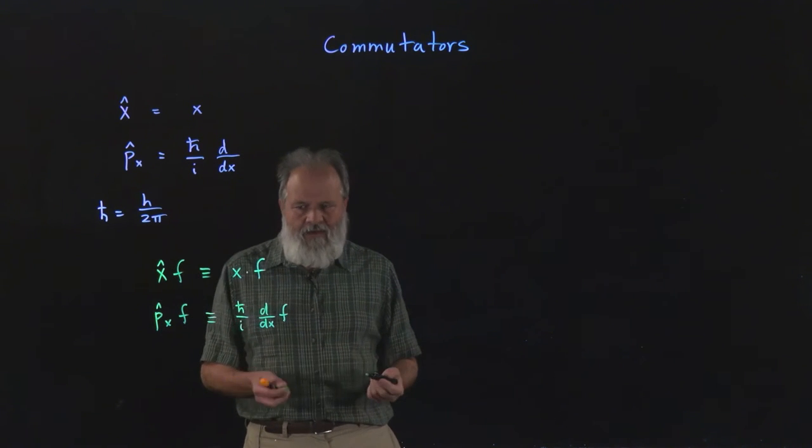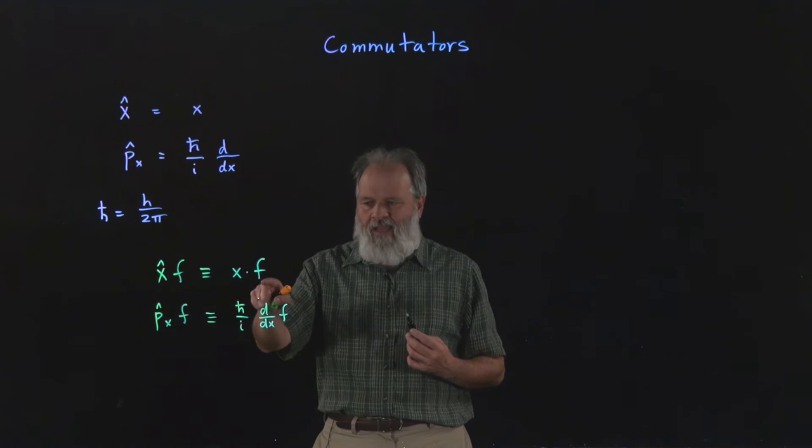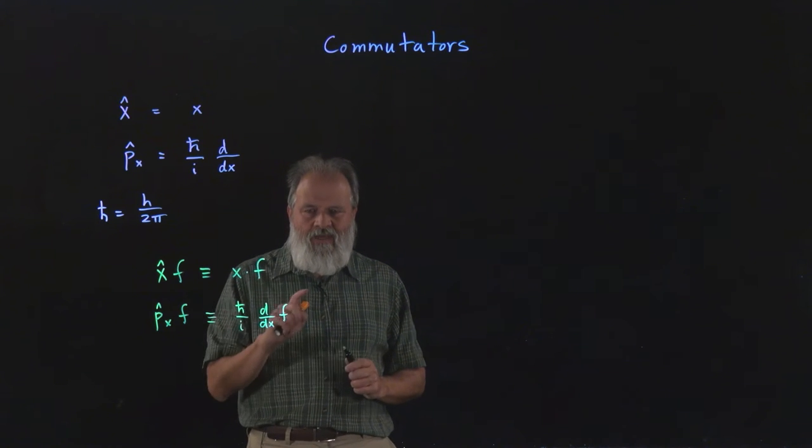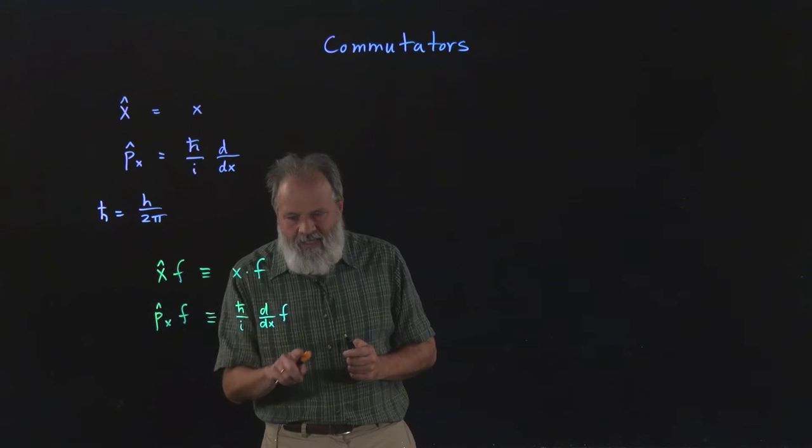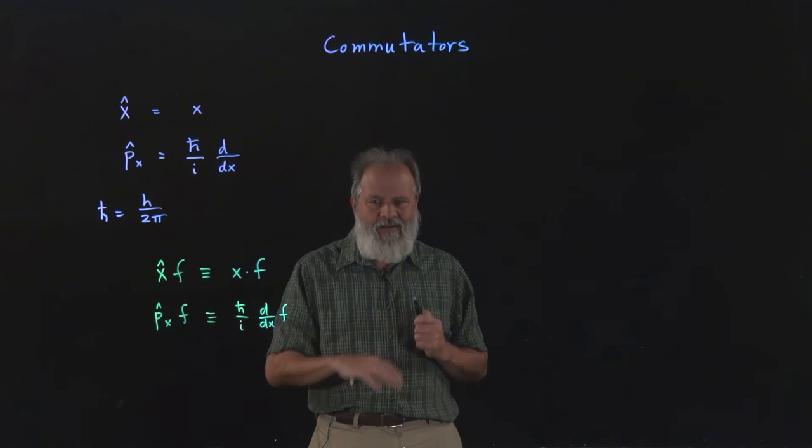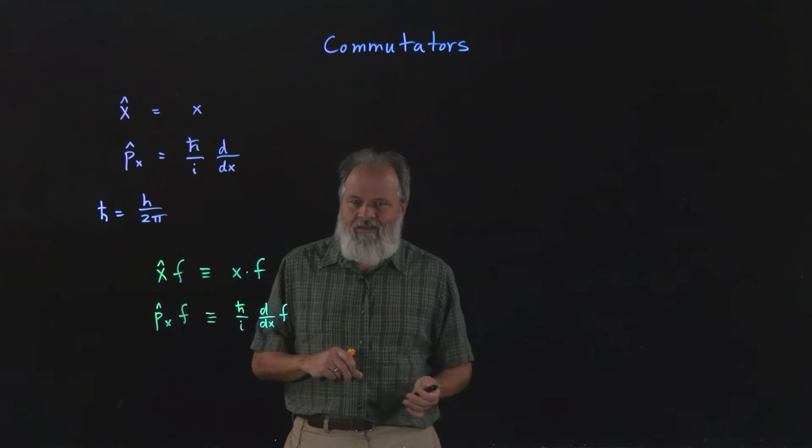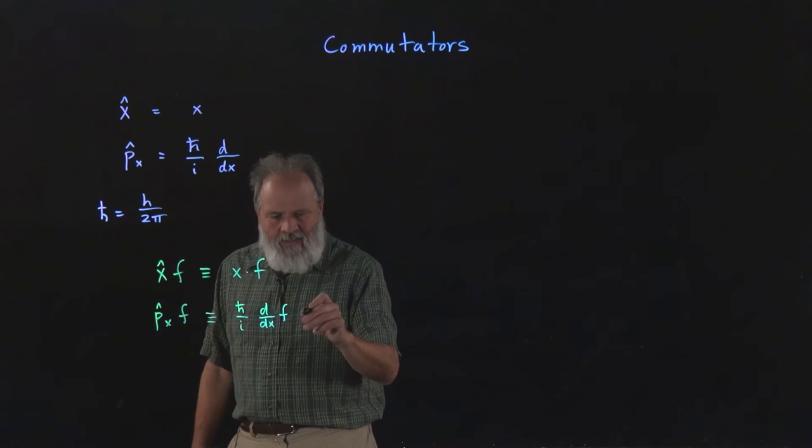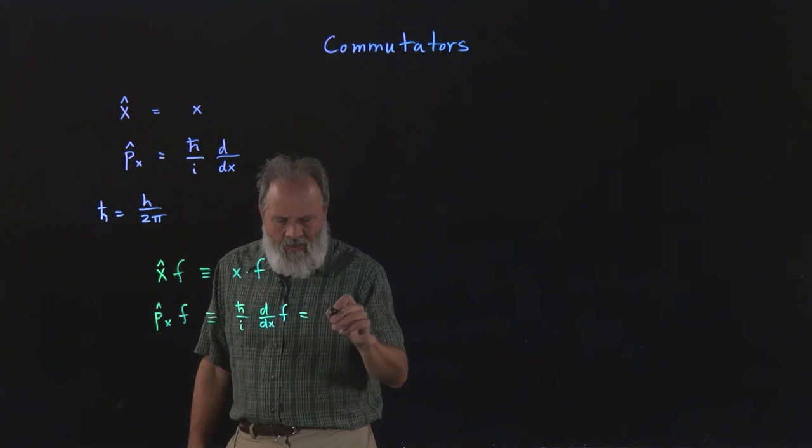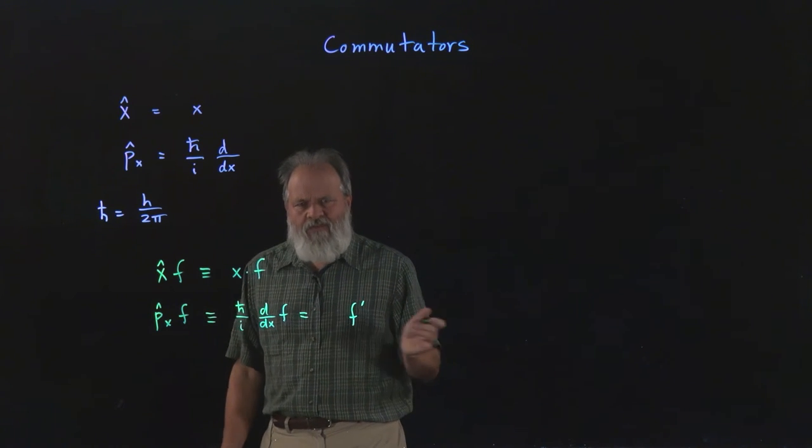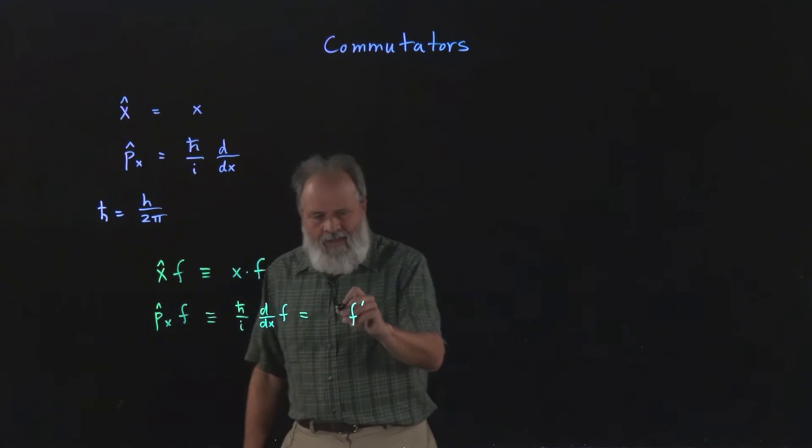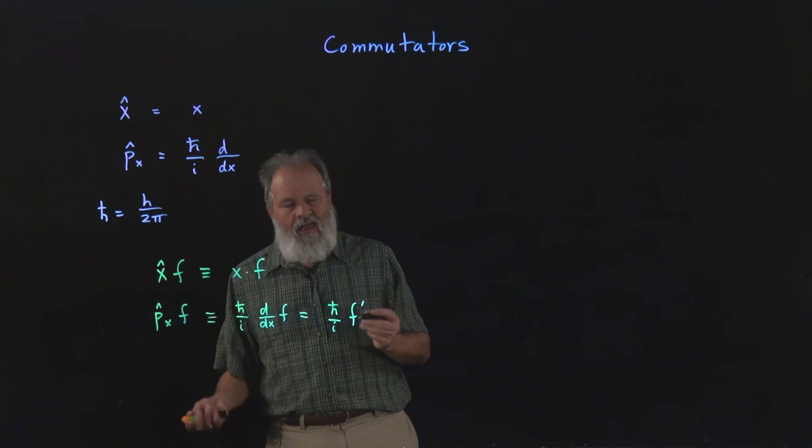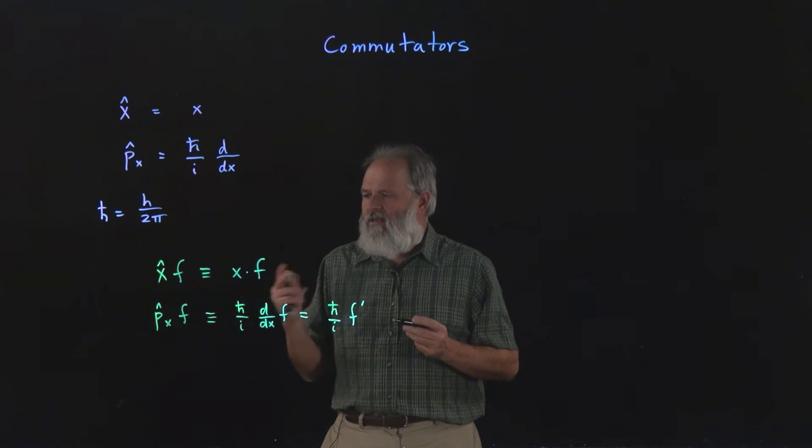So now here's where you can see where the order matters. If we're multiplying f which is a function times x which is a function, it doesn't matter what order you do it. However, the derivative when you learn calculus is always written as d/dx of the function, and the function is written immediately to the right that you're taking the derivative of. And so we're going to use what they do in calculus and we're going to call that f prime. So prime is the first derivative, and that's going to be times h bar over i. So now that's how we apply the operators to the function.